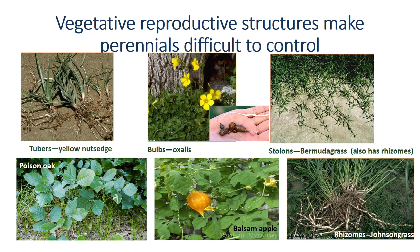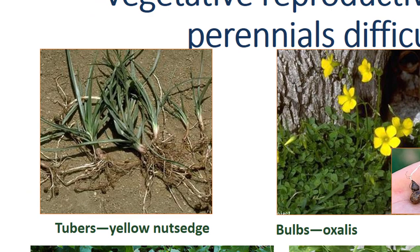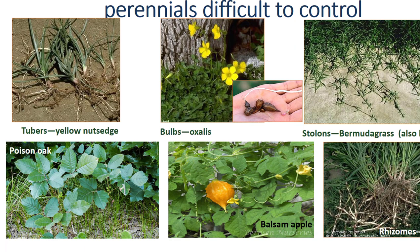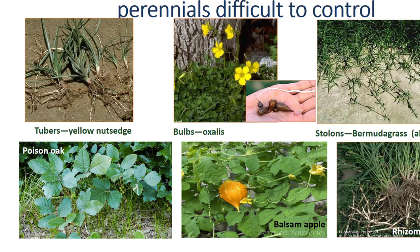Many perennials lose their leaves or die back entirely during the winter, but regrow each spring from roots or underground storage organs. Yellow nutsedge has tubers which grow from roots; oxalis has bulbs, and new plants emerge from the bulbs each year. Bermudagrass has stolons and rhizomes, which are above-ground and below-ground stems. Most perennials can also reproduce by seed. Woody plants such as trees, shrubs, and vines are perennial and under certain circumstances are considered weeds, such as poison oak, mimosa tree, and balsam apple.